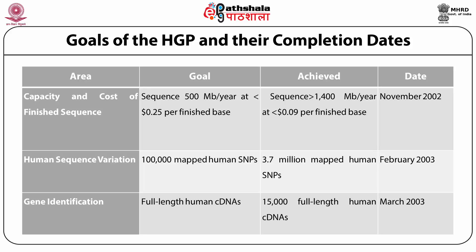Human sequence variation was an important goal. They had set to map 100,000 human SNPs and in reality they were able to map 3.7 million SNPs by February 2003. Another important goal was gene identification. The HGP aimed at identifying full-length human cDNAs and was able to identify some 15,000 full-length human cDNAs by March 2003.